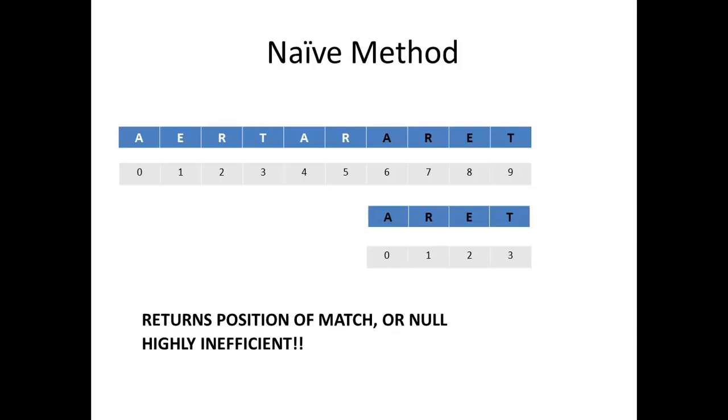When a match is found, most algorithms would return a position of the match. In this case, this is 6, or if the pattern is not included in the text string, they return null. As you may have guessed, this is rather inefficient, or to put it more correctly, we can do better.